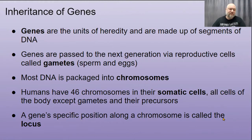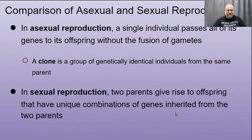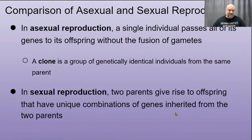Most DNA in living systems is packaged as chromosomes. Humans have 46 in their somatic cells, or body cells — all cells of the body except the gametes and their precursors. A gene's specific position along a chromosome is called its locus. As a quick review: asexual reproduction is when a single individual passes all its genes to offspring without fusion of gametes — basically a clone, an identical copy of the parent.